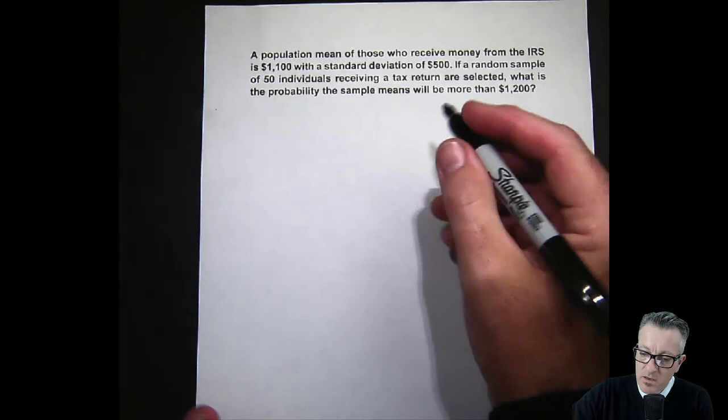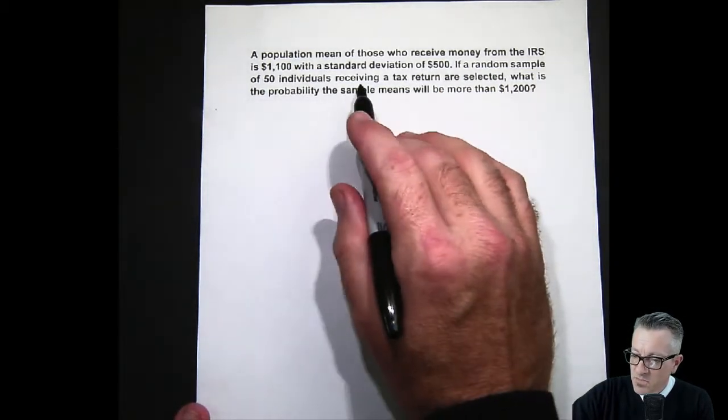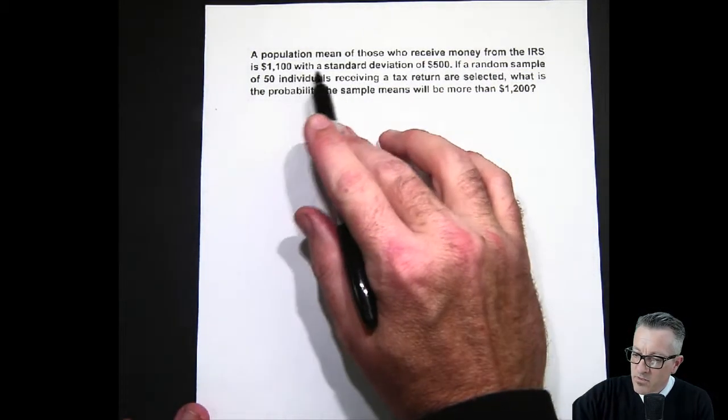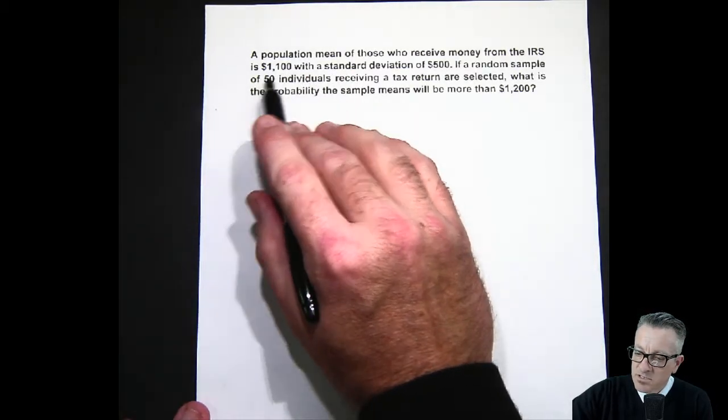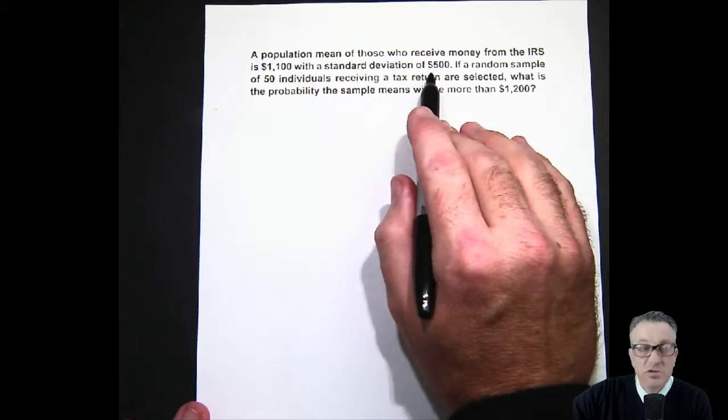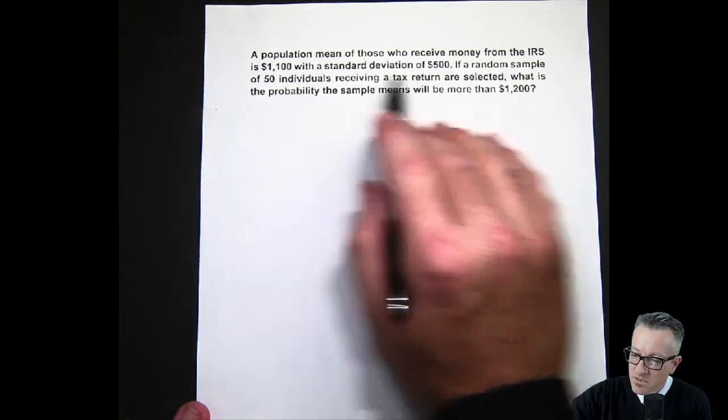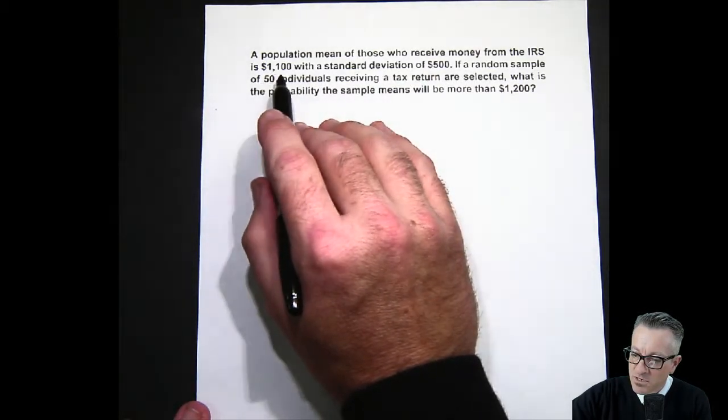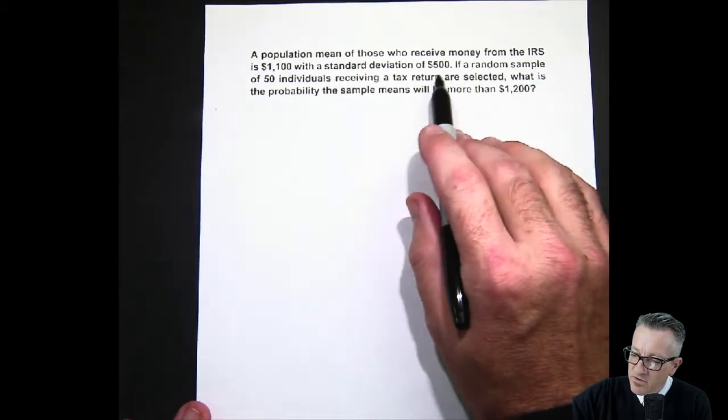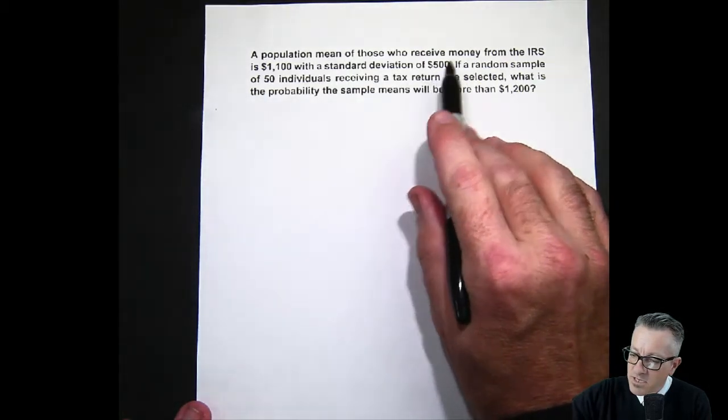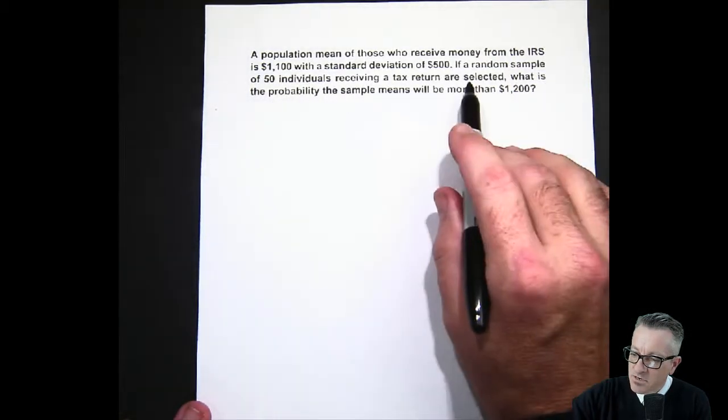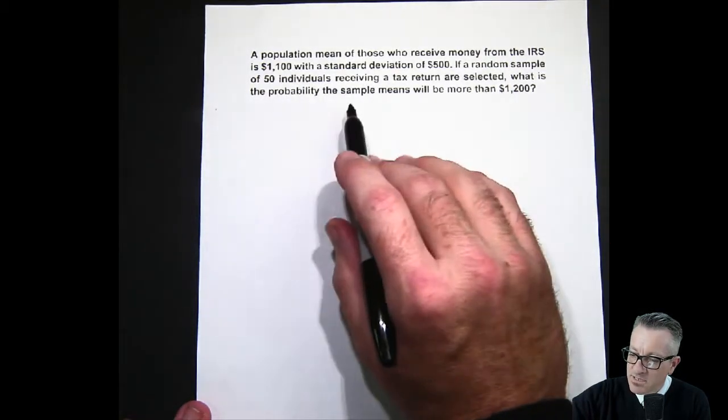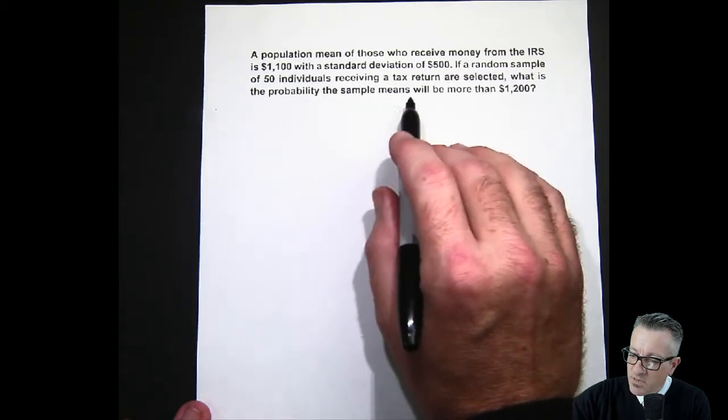The population mean of those who received money from the IRS is $1,100 with a standard deviation of $500. So our population mean μ is $1,100 and σ is $500. If a random sample of 50 individuals receiving a tax return are selected, what's the probability the sample mean will be more than $1,200?